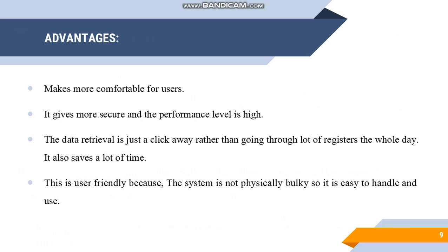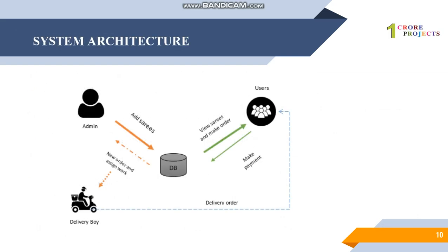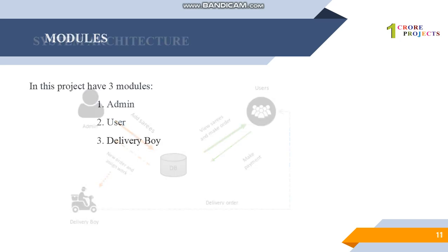For the system architecture, first the admin adds the sarees. After adding sarees, the user can view them and make a payment. After the payment, the admin will assign the work to the delivery boy, and the delivery boy will deliver the order to the users. These are the system architecture details.